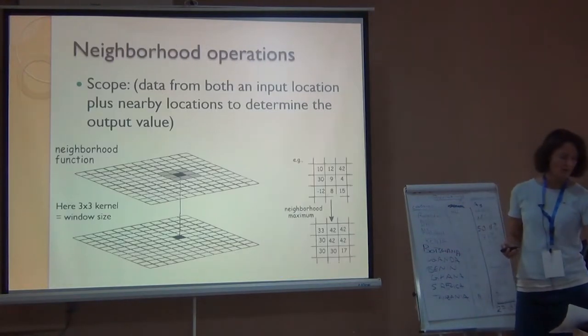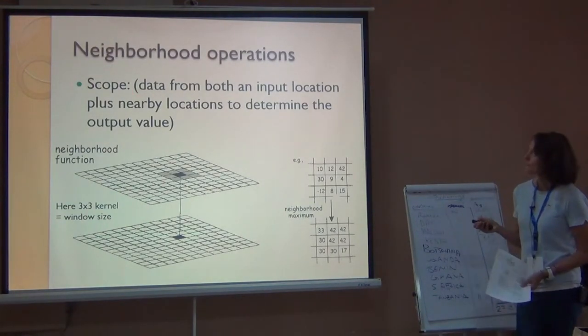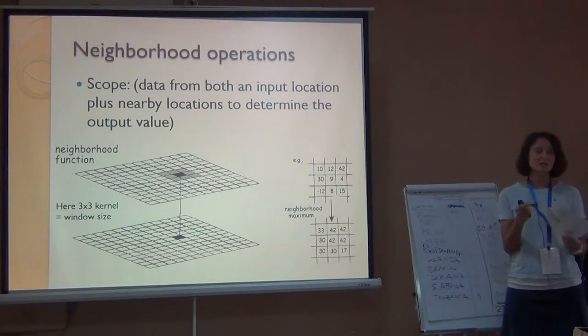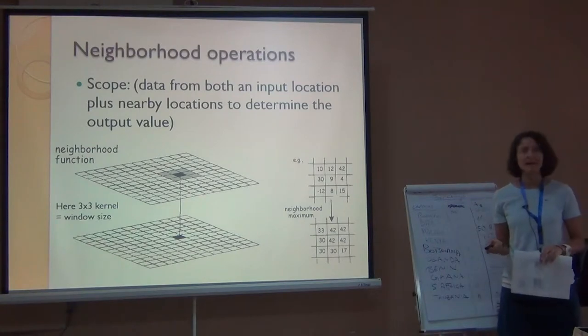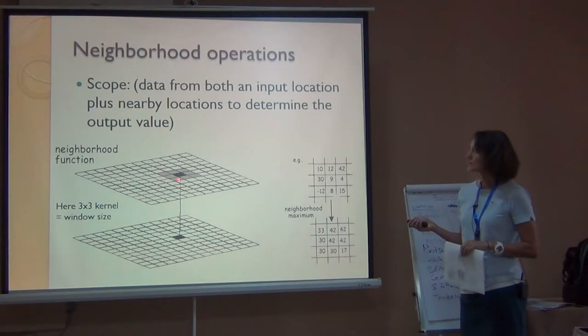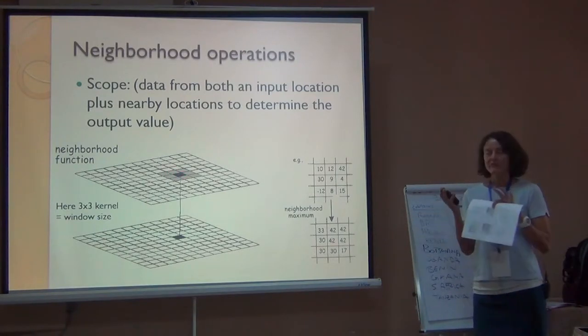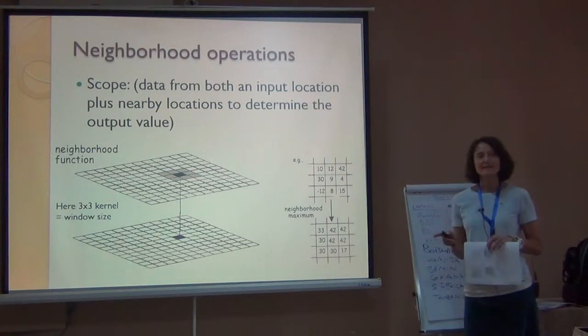Very interesting are neighborhood operations. So the scope is going to consider some form of neighboring, i.e. some proximity of pixels, in order to determine the output value. So let's say I have, I'm asking for a neighborhood function, here a 3 by 3 kernel. So I'm defining my neighborhood as something that's 3 pixels wide and 3 pixels high. And I'm saying I want you to look at all these 9 pixels in order to determine the value at that center pixel.